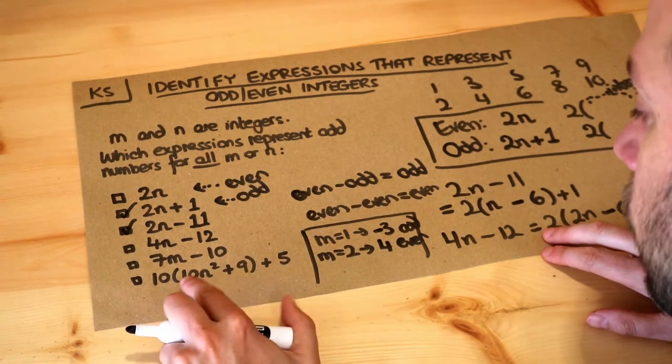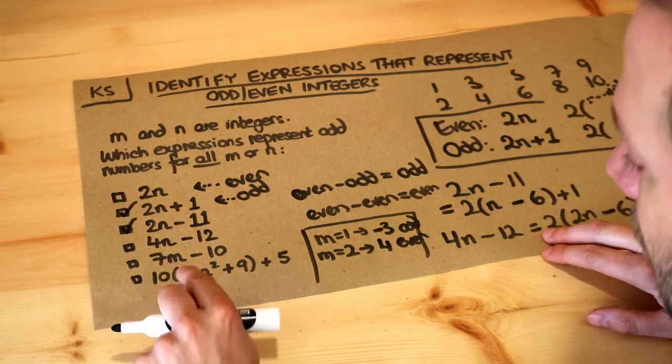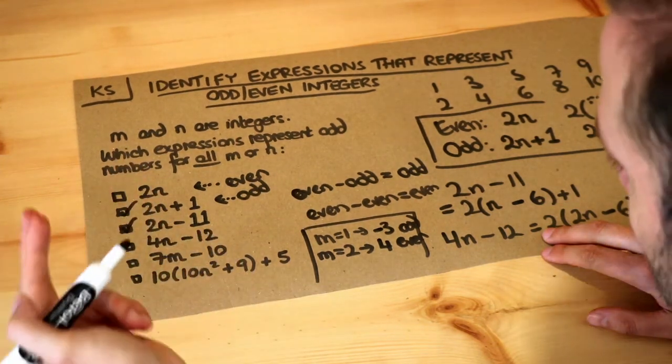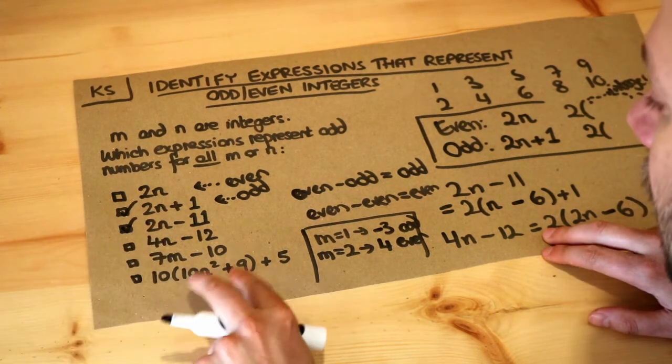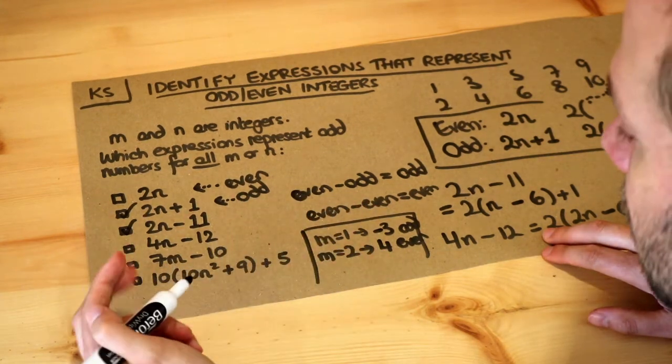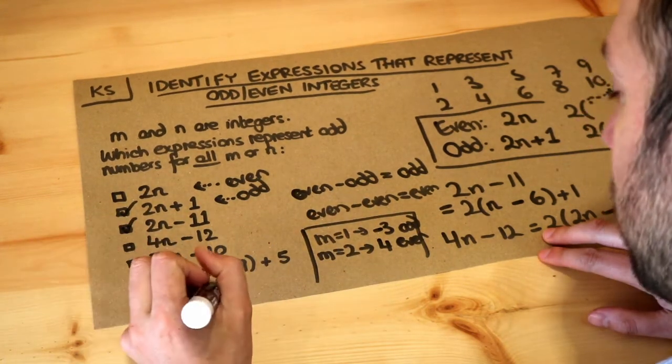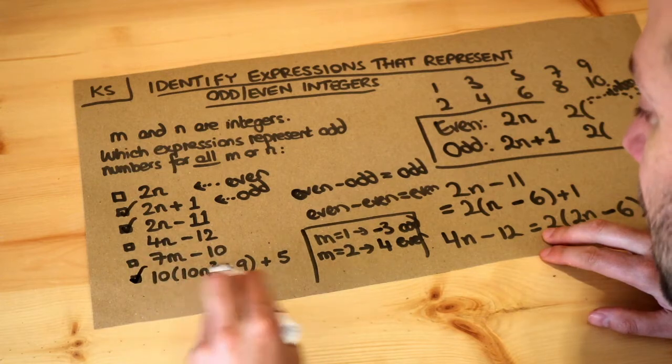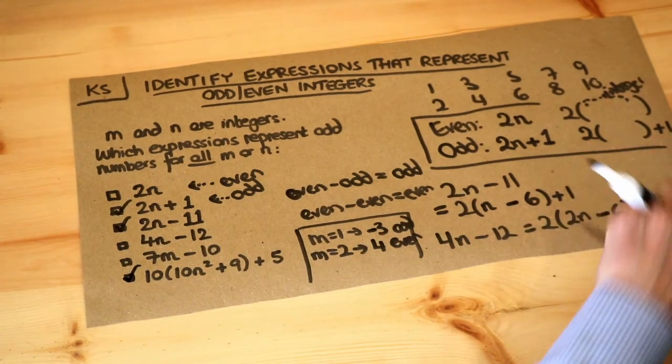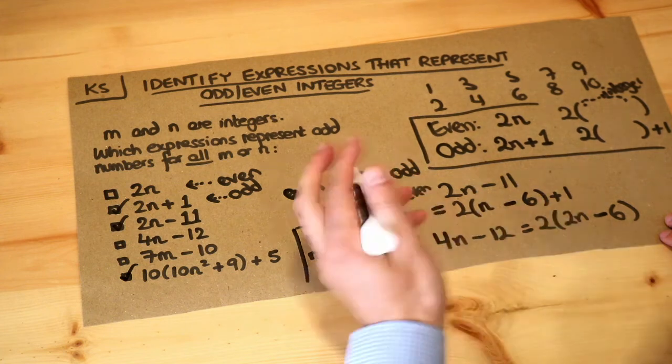And then finally, this last one, well, we could use our common sense. If we add 10 times an integer, well, it's going to end with a 0, it's going to be an even number. And even plus odd is odd. So this one is guaranteed to be odd. And again, if we wanted to, we could expand it out and put it in the form 2 times something plus 1 in the same way.